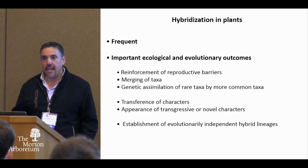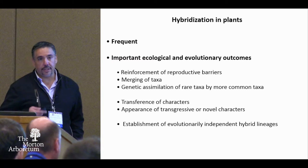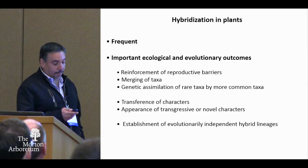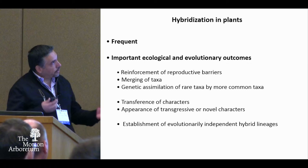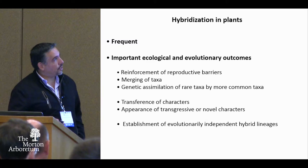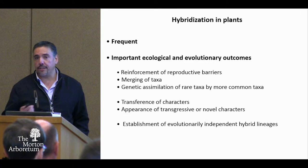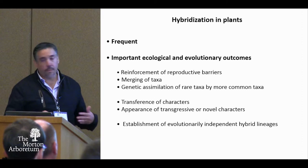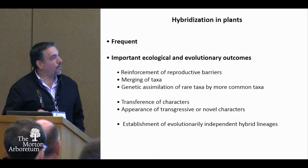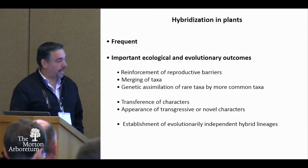To start, we all know that hybridization in plants is very frequent and that it has several different important ecological and evolutionary outcomes, including, for example, the reinforcement of reproductive barriers, but also, on the contrary, the merging of hybridizing taxa or the genetic assimilation of rare taxa by more common taxa, also the transference of characters between hybridizing species or the appearance of transgressive or novel characters in the hybrids, or even the establishment of evolutionarily independent hybrid lineages — that is, hybrid speciation.